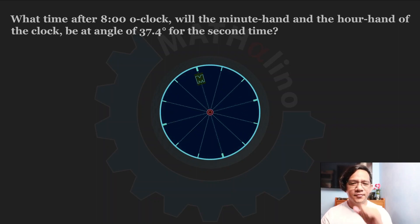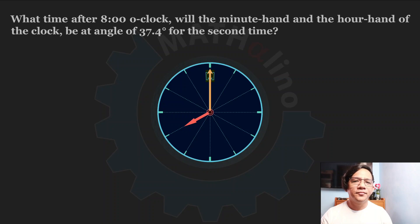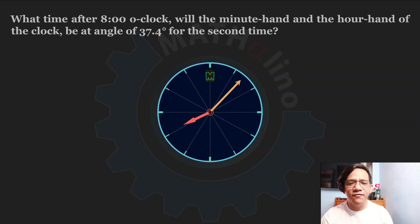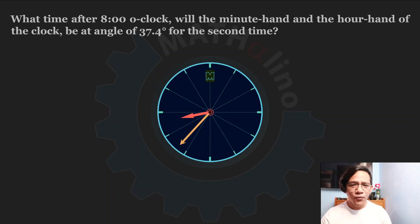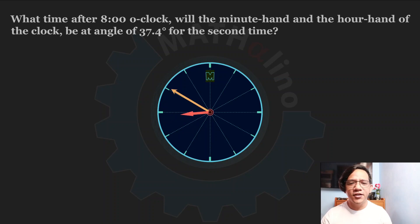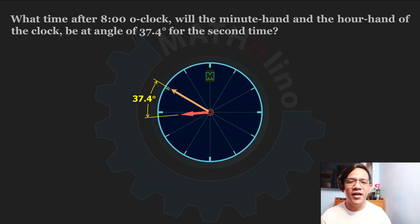Let us illustrate that problem. We have this 8 o'clock sharp. We are going to position the minute hand and the hour hand so that they will subtend an angle of 37.4 degrees from each other. That is the first time that will occur for those two lines to create a 37.4 degrees. But this is not the required. What is required here is the time that they will subtend an angle of 37.4 degrees for the second time.